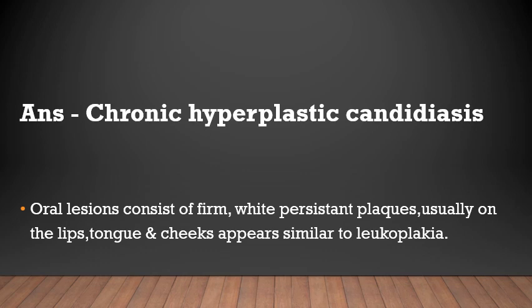In leukoplakia-type candidiasis, also known as chronic hyperplastic candidiasis, the oral lesion consists of a firm white persistent plaque that is usually present on the lips, tongue, and cheek, and appears similar to leukoplakia.